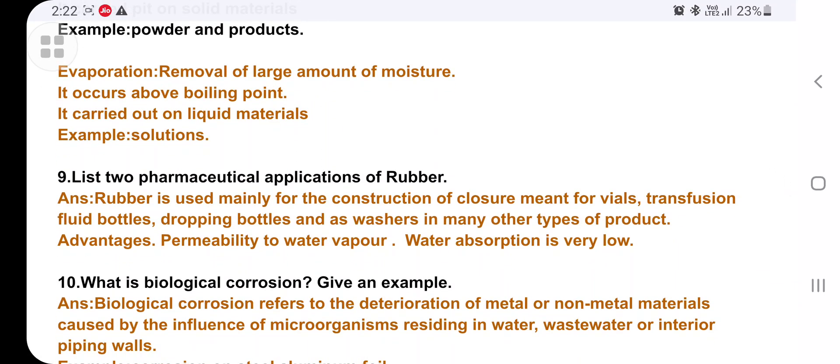List two pharmaceutical applications of rubber. It is mainly used in the construction of closures for vials, transfusion fluid bottles, dropping bottles. Advantages: permeable to water vapor, water absorption is very low because the pores of the rubber are very small.